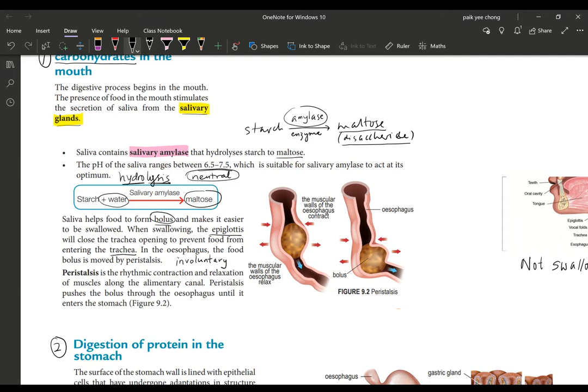In the esophagus, the food bolus is moved by peristalsis. Peristalsis is an involuntary action controlled by the medulla oblongata in your brain. You've learned this in Form 3 last year, where you have the involuntary movement of the smooth muscles to push and contract and relax to push the food down the alimentary canal. Peristalsis is the rhythmic contraction and relaxation of muscles along the alimentary canal.